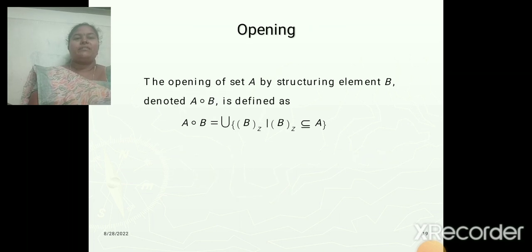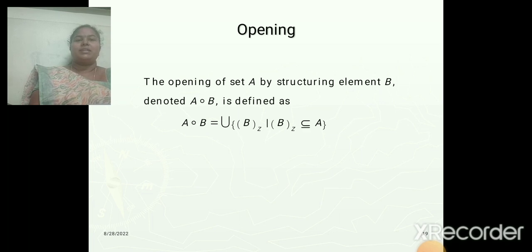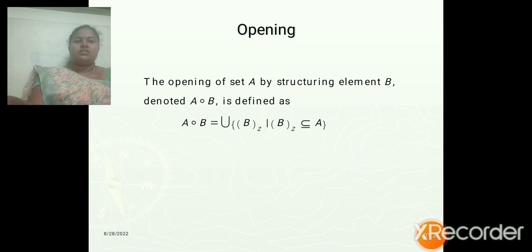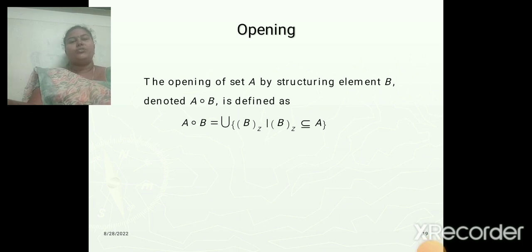In the opening function, set A opened by structuring element B is defined as the union of translations of B by Z value. The opening of A by B is obtained by taking the union of all translates of B that fit into set A. It can be expressed by the fitting process as a given formula.